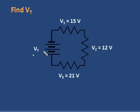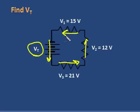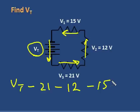We want to find Vt, and we know that the voltage gains and drops around this series circuit will come to zero. Therefore, I can say Vt minus 21 volts, minus 12 volts, minus 15 volts equals zero.